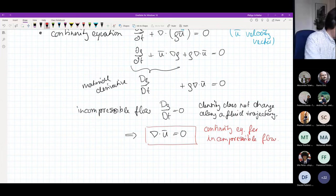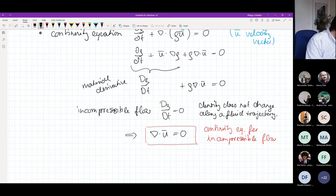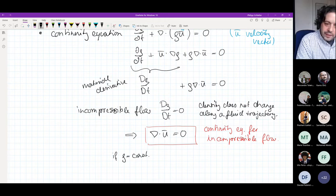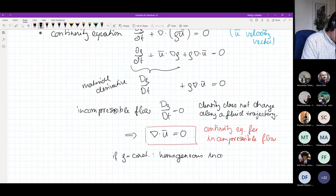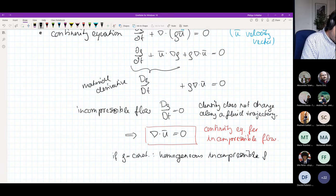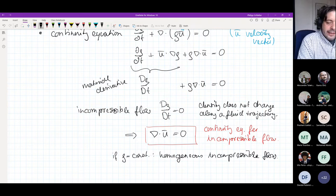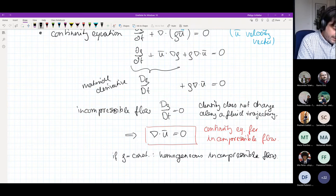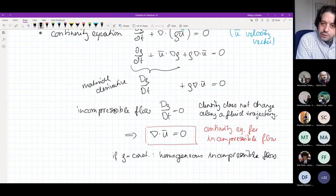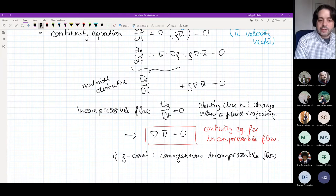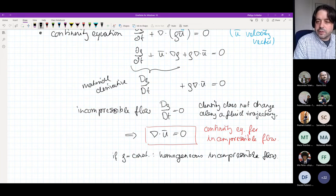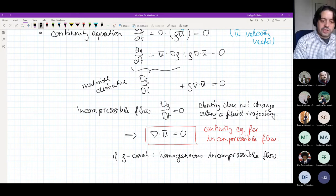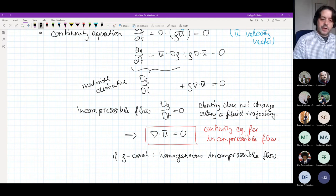I want to make two comments here. The first one is if the density is actually constant in the whole domain, then we will call the flow to be homogeneous incompressible flow. The second comment is that the continuity equation, the divergence of u is zero, does not imply that the density is constant. It just implies that the density along streamlines or fluid trajectories is constant. But you may have different densities in the flow. But if you don't want that, you would call it homogeneous incompressible. This is the first equation that we work with.